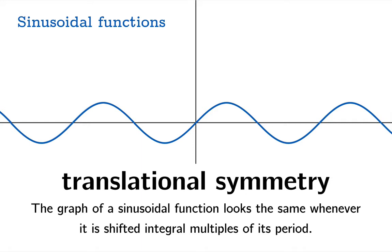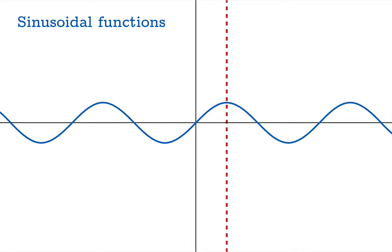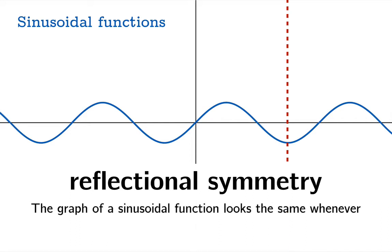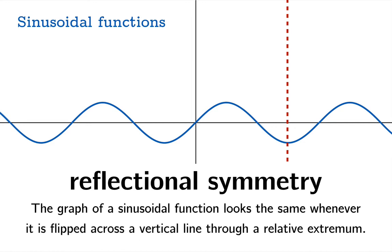But there's more than translational symmetry. It also has reflectional symmetry. We picked this one relative max, but of course we can move over to a relative min and do the same thing. We can reflect the graph and have it look the same. The graph of a sinusoidal function looks the same whenever it's flipped across a vertical line through a relative extremum.